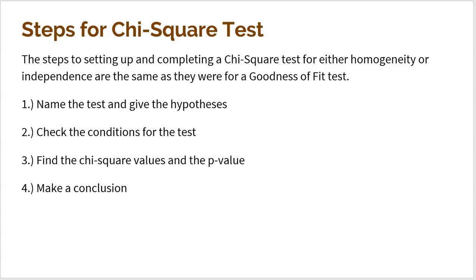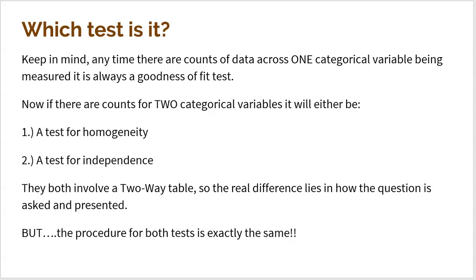In this video, we're going to focus on a test for homogeneity and a test for independence. Any time there are counts of data across one categorical variable being measured, there's always a goodness-of-fit test — no matter how many categories you have. However, when there are two categorical variables being measured, it's either going to be a test for homogeneity or a test for independence. They will always have a two-way table, and the real difference lies in how the question is asked. But the procedure for both tests are exactly the same.